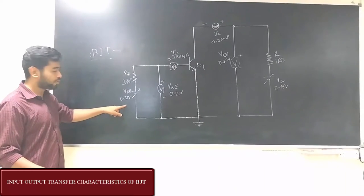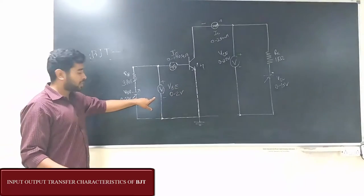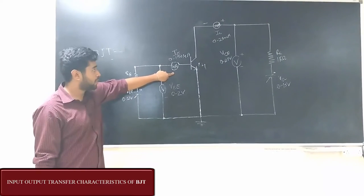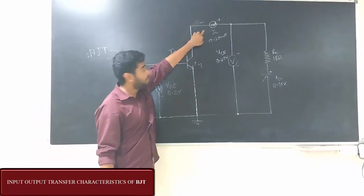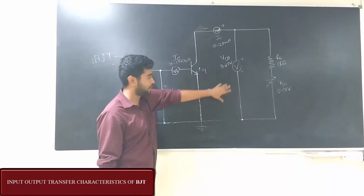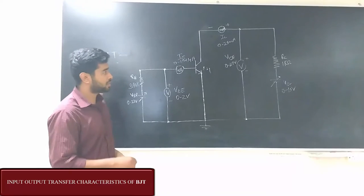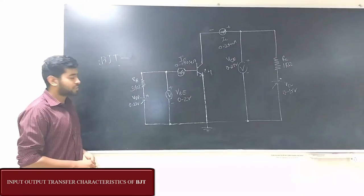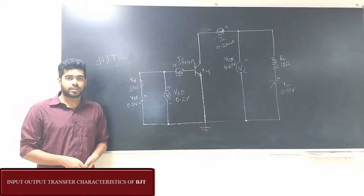The input voltage is given through VBB. This voltmeter gives us the input voltage. This microammeter gives us the input current. This milliammeter gives us the output current, and this voltmeter gives us the output voltage. We have two resistors: collector resistor is 1K and the base resistor is 390K.